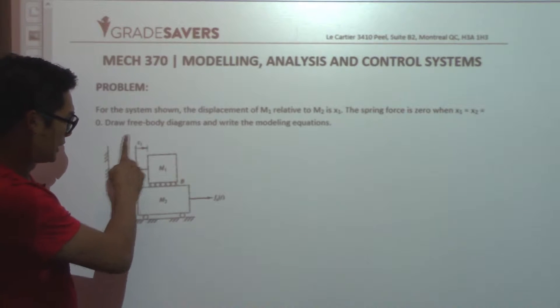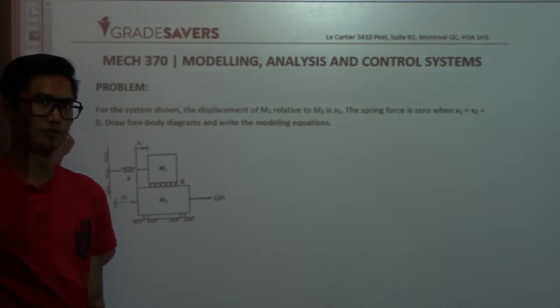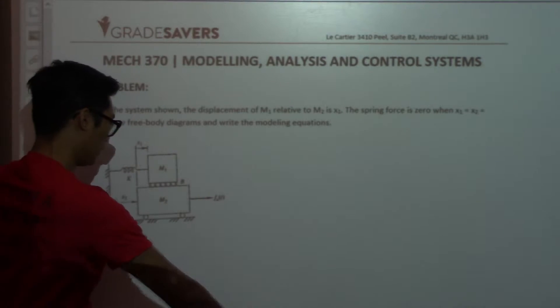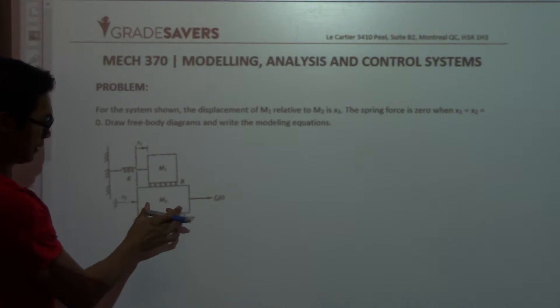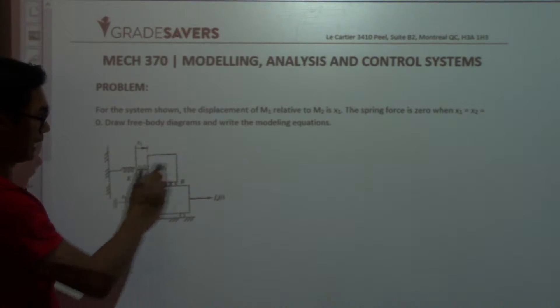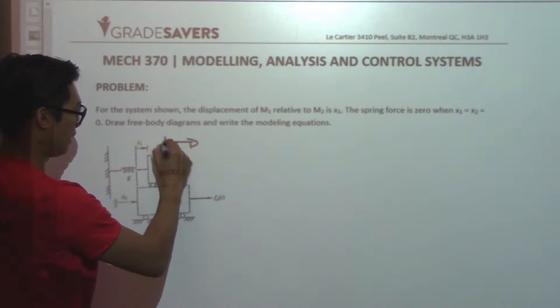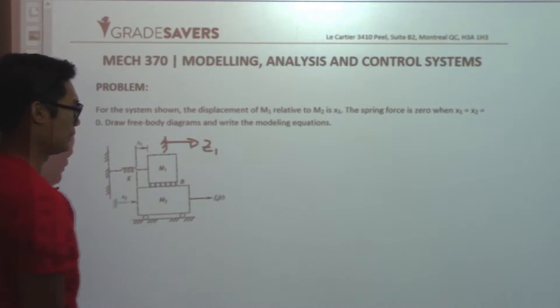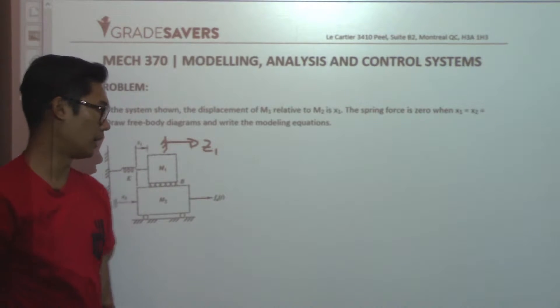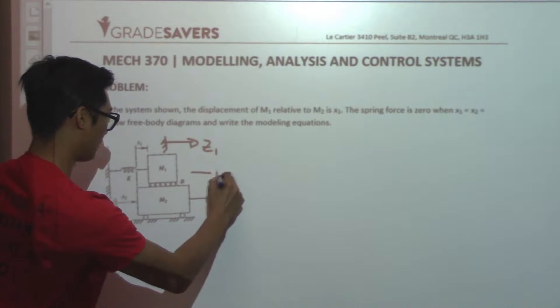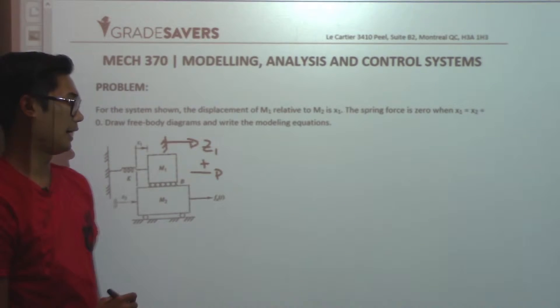Now what we notice here, it's a bit special since we have relative motion. So I see that mass 2 is already defined here, having motion x2, but M1 doesn't. So I'm going to define here the absolute motion of M1 to be z1. And here I'm also going to pick my positive x-axis.